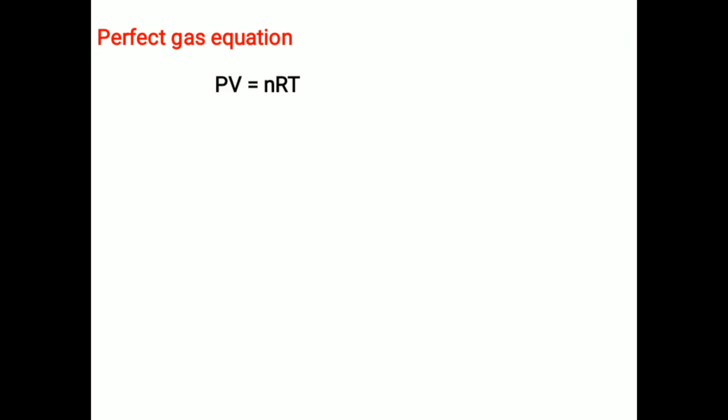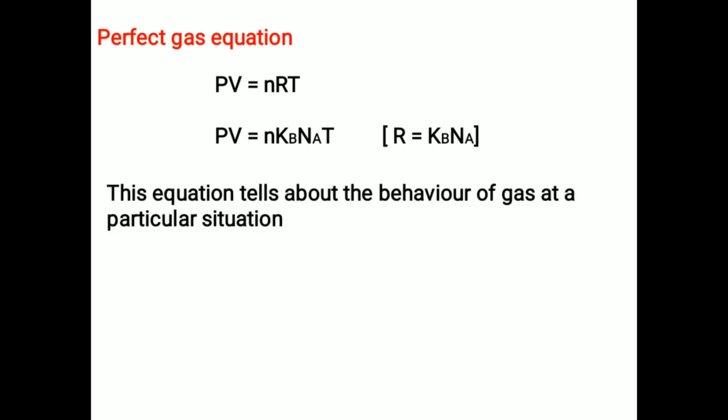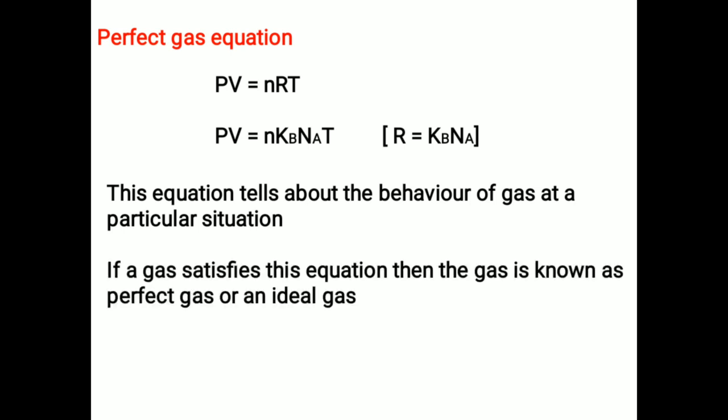Perfect gas equation is given by PV equals nRT, since universal gas constant R equals KB × Na. Here P and V are pressure and volume, T is absolute temperature, small n is number of moles, R is universal gas constant, KB is Boltzmann constant, and Na is Avogadro number. This equation tells about the behavior of a gas at a particular situation. If a gas satisfies this equation, then the gas is known as a perfect gas or an ideal gas.